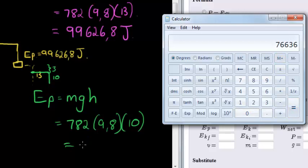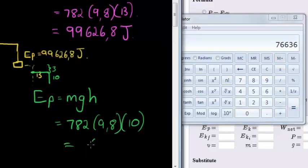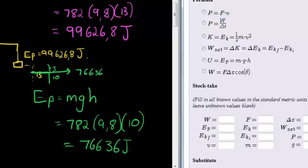76636 Joules. So that is the potential energy at this point. 76636 Joules. Next question.